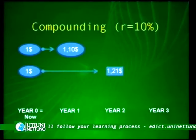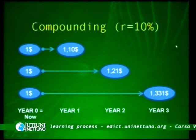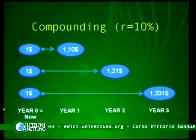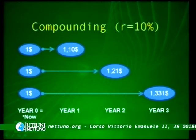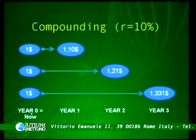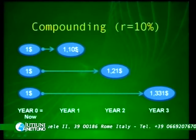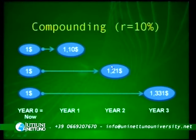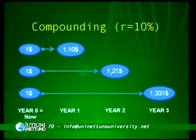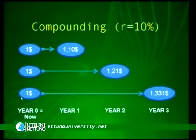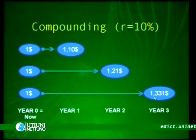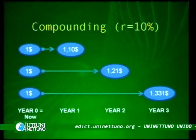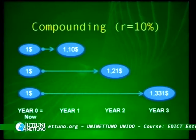Here we have an example of compounding where we apply this formula. The compounding rate is always 10% and year zero is now. We have three alternatives: invest one dollar for one year and get $1.10; invest one dollar for two years and get $1.21; or invest one dollar for three years and get $1.33 at the end of year three. This is the formalization of the general concepts discussed in the previous class.